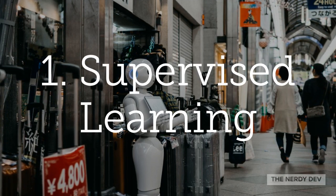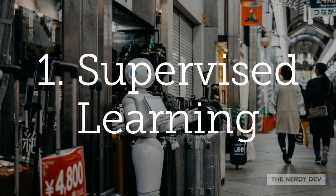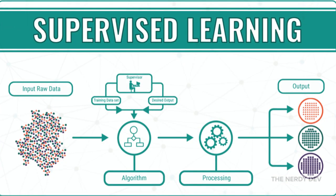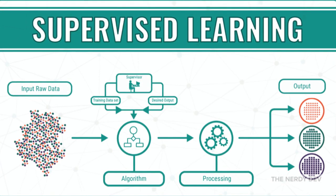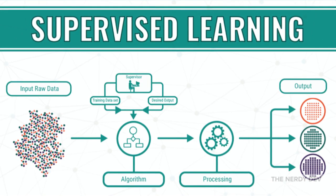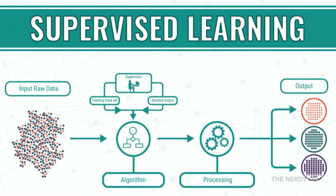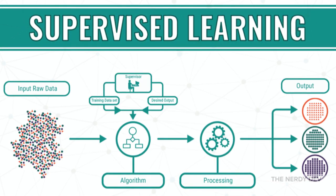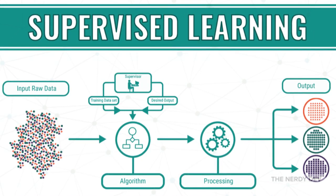Let us start with supervised learning. While training and building your model, the data is split in the ratio of 8 to 2, or 6 to 4, or any other ratio depending on your requirements. In training data, we feed both input and output. The model learns from training data only, and then we use machine learning algorithms to build our model and its statistical power of prediction.